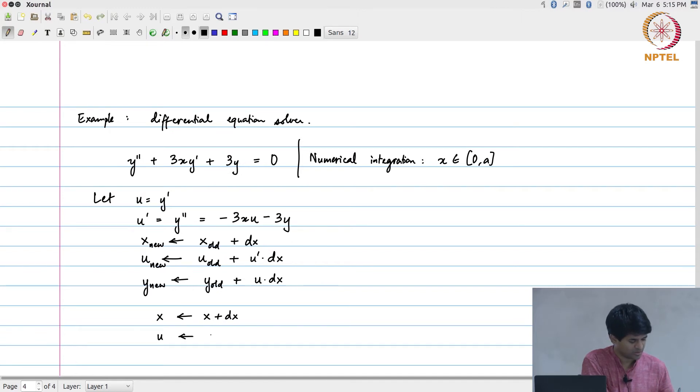u gets the value u - 3xu - 3y, or just expanding this out what I will end up with is -3xu dx - 3y dx, and y gets the value y + u dx.